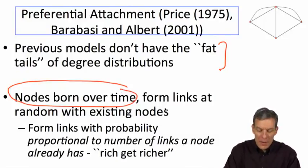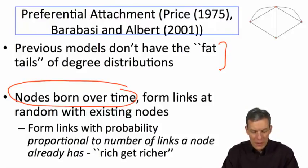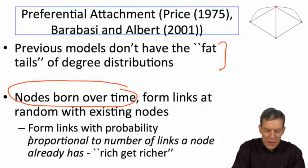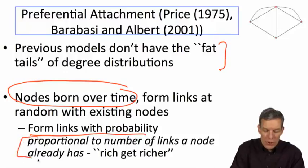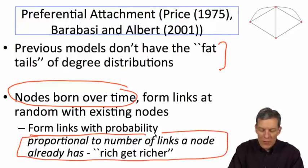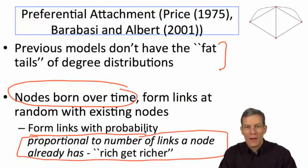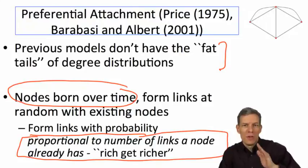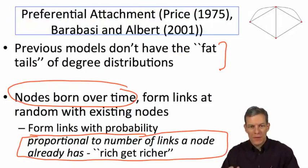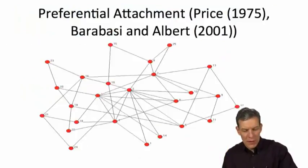But now, instead of forming links at random with existing nodes uniformly at random, the probability that links are going to form is going to be proportional to the number of links that a node already has. That's going to be the rich get richer part. And that's the preferential attachment. I prefer to attach to nodes that already have high numbers of links. So that's the system that we're looking at.